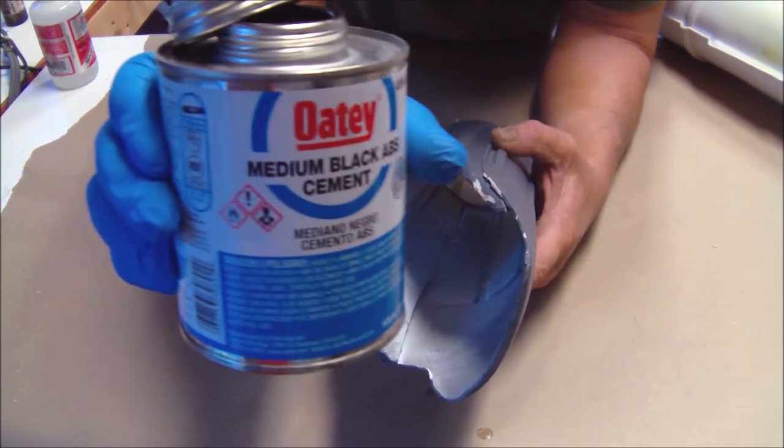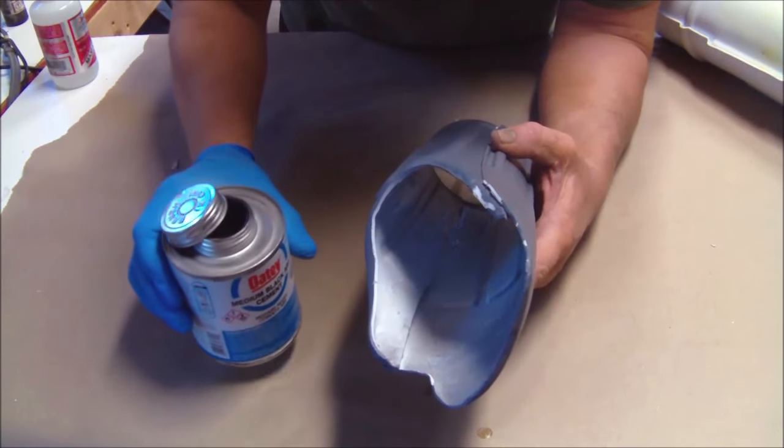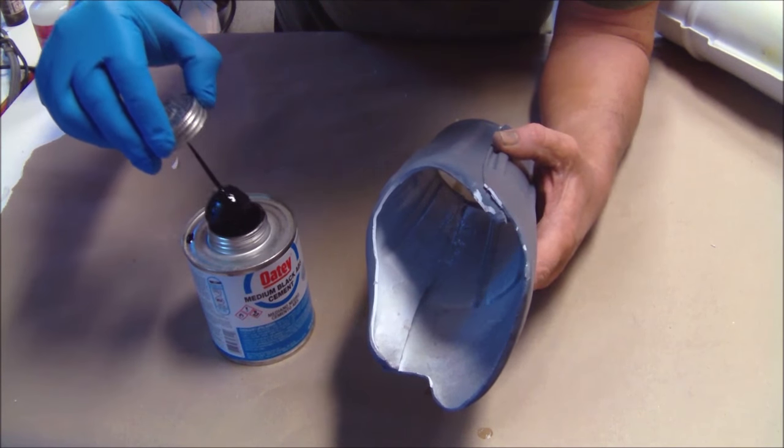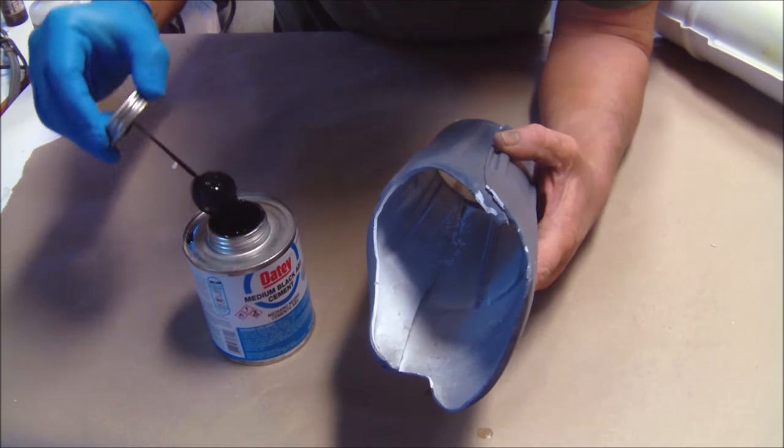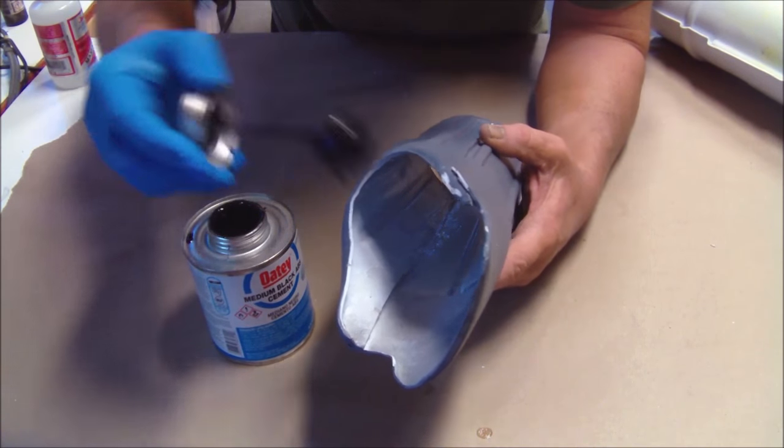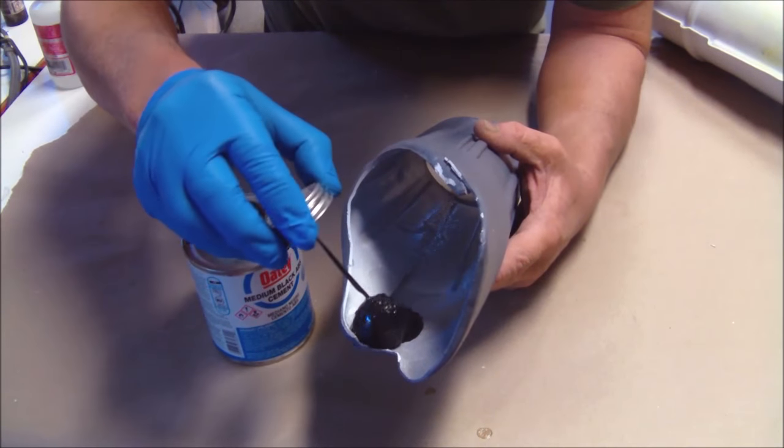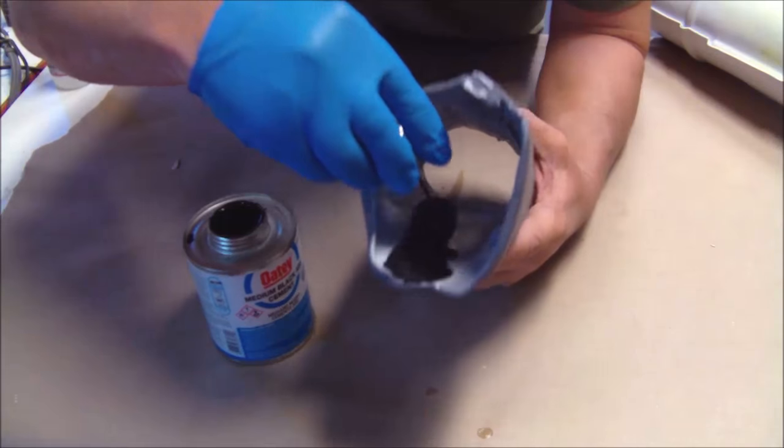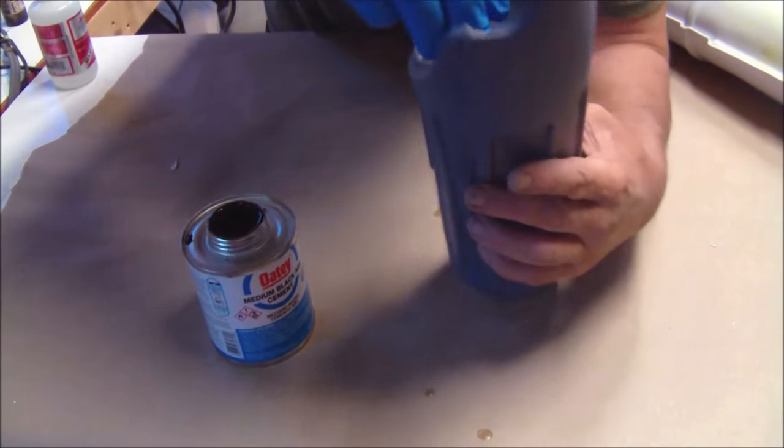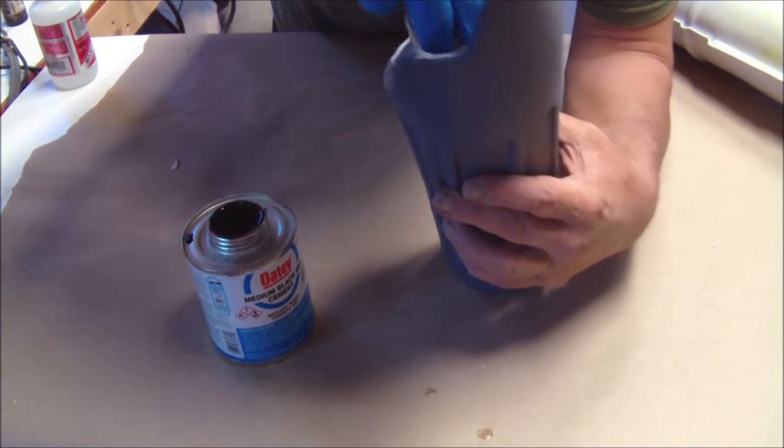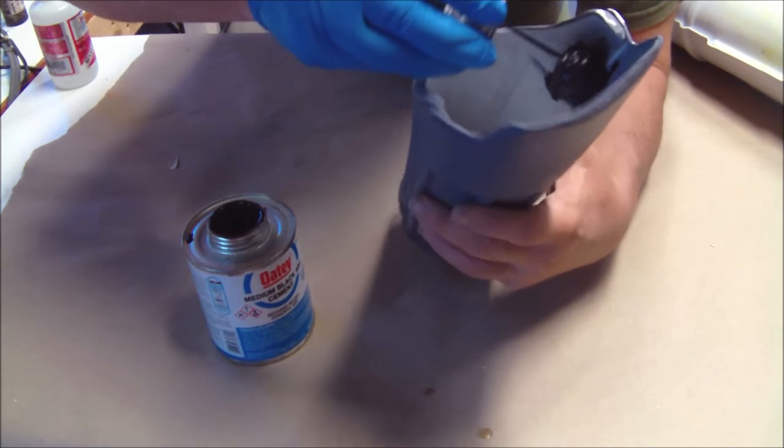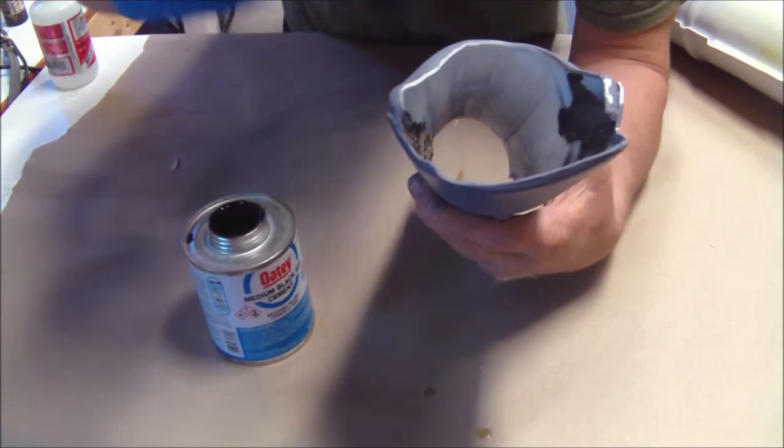You want to apply this across your seam line. You want to do it very liberally so that it covers everywhere the super glue is and the two halves of your vacuform part. I'm wearing a glove because I need to reach in here a little bit to really get that seam line. So do it on the entire thing.